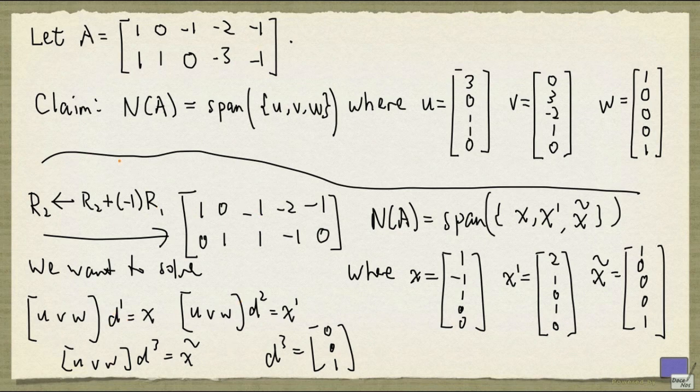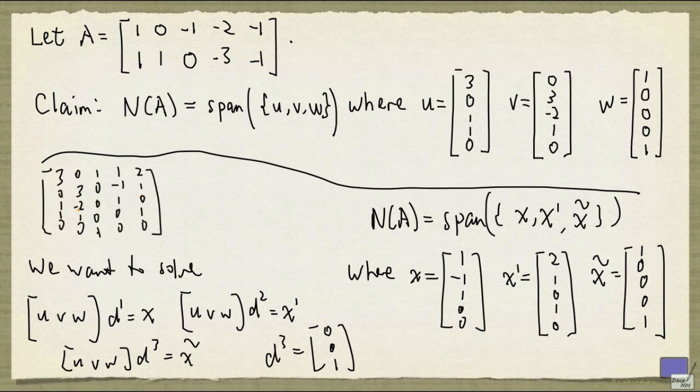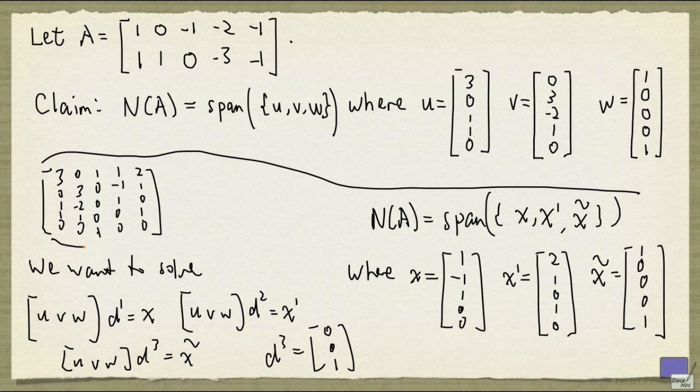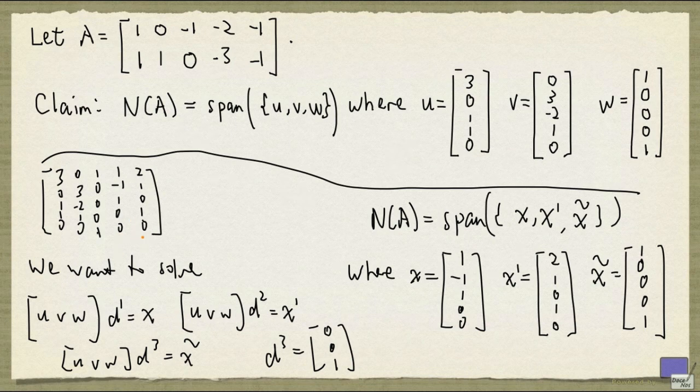What we can do is, we can just form the augmented matrix and solve both systems at once. Okay, as you can see here, correspond to u, v, w. This one is x, and this one is x prime.